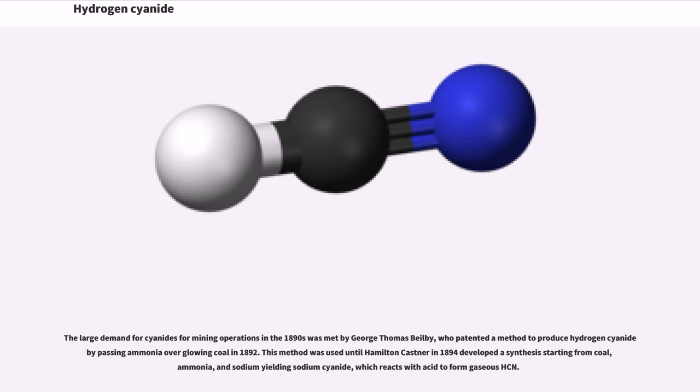The large demand for cyanides for mining operations in the 1890s was met by George Thomas Beilby, who patented a method to produce hydrogen cyanide by passing ammonia over glowing coal in 1892. This method was used until Hamilton Castner in 1894 developed a synthesis starting from coal, ammonia, and sodium, yielding sodium cyanide, which reacts with acid to form gaseous HCN.